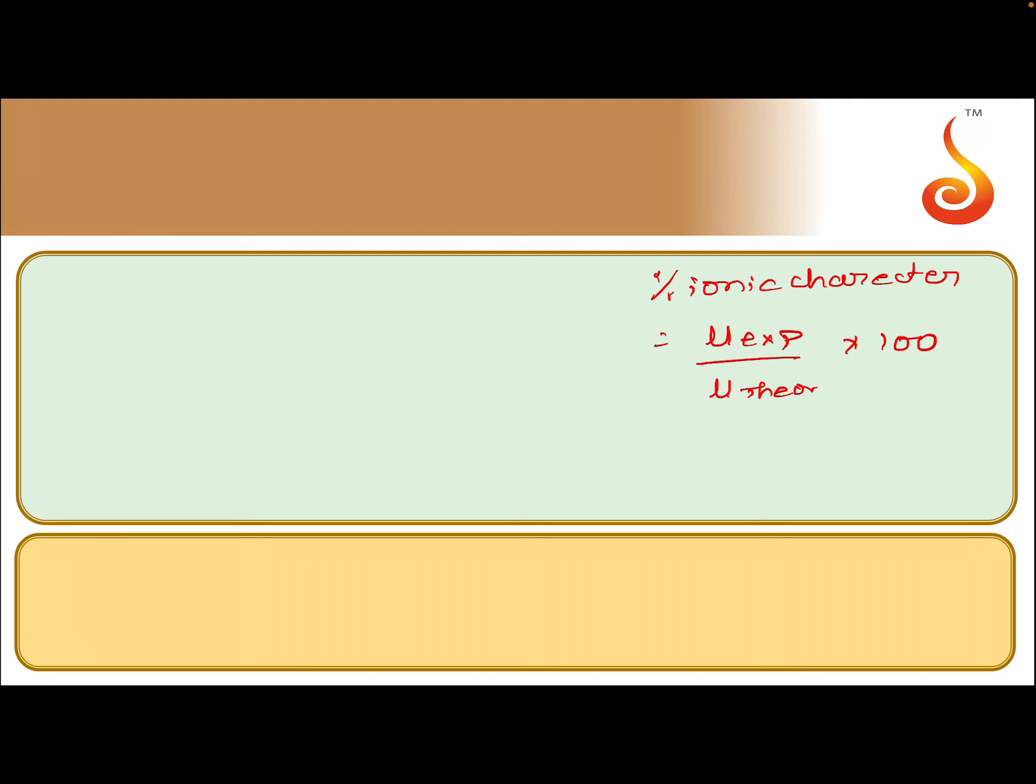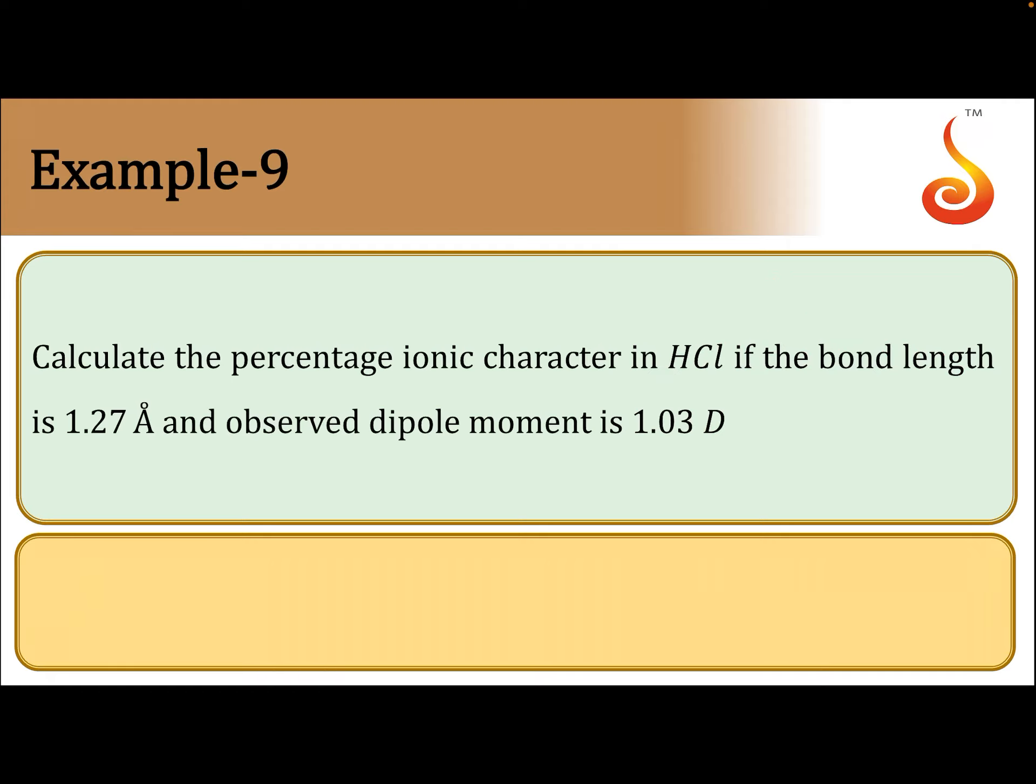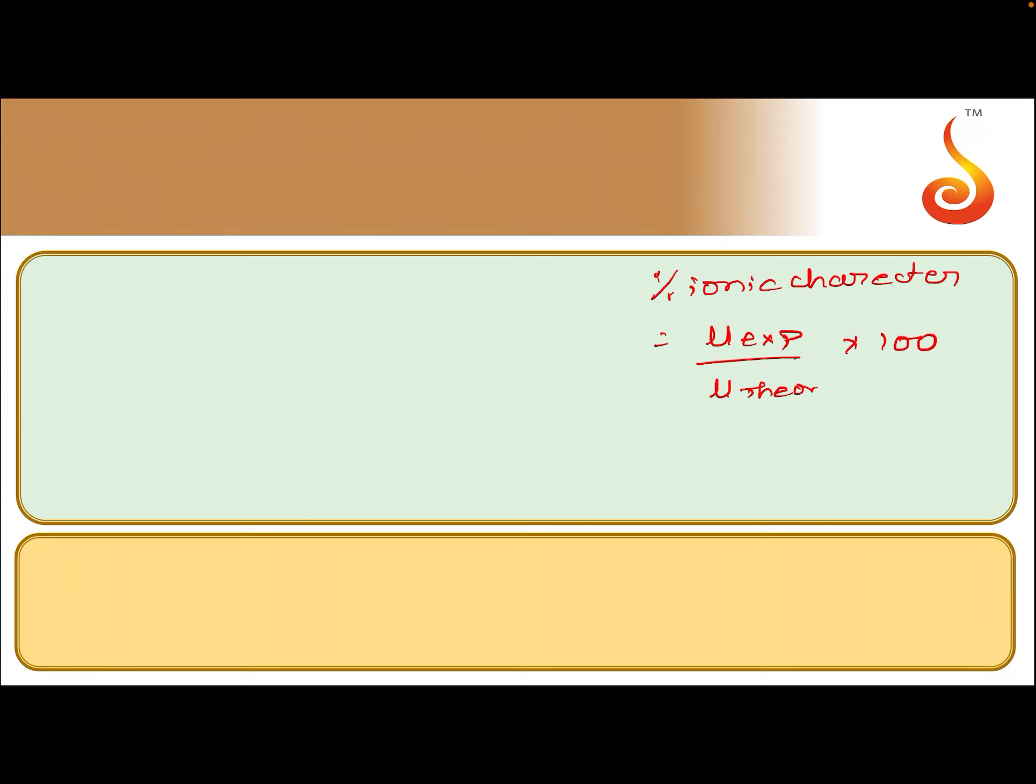Let us see what is the given data here. Bond length is 1.27 angstrom units, that is 1.27 into 10 to the power of minus 10 meters.